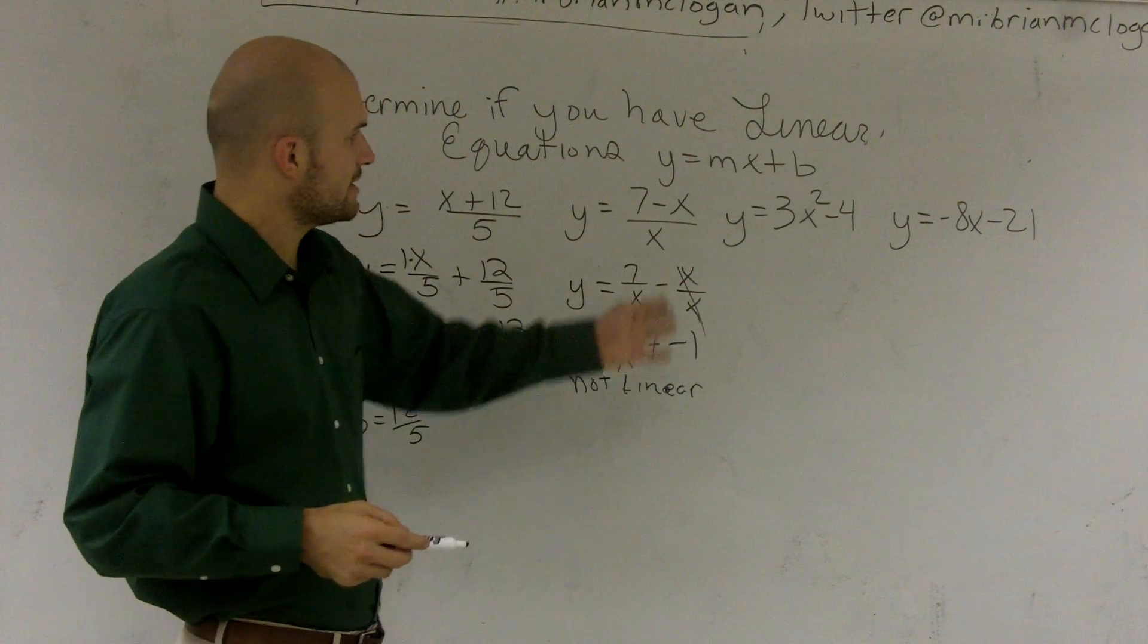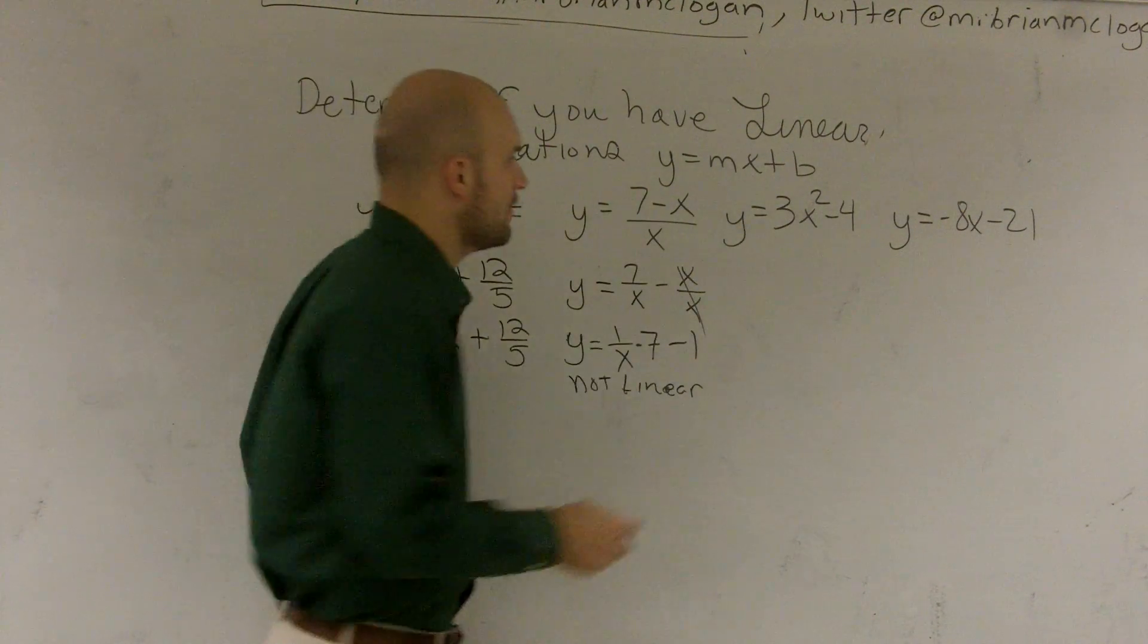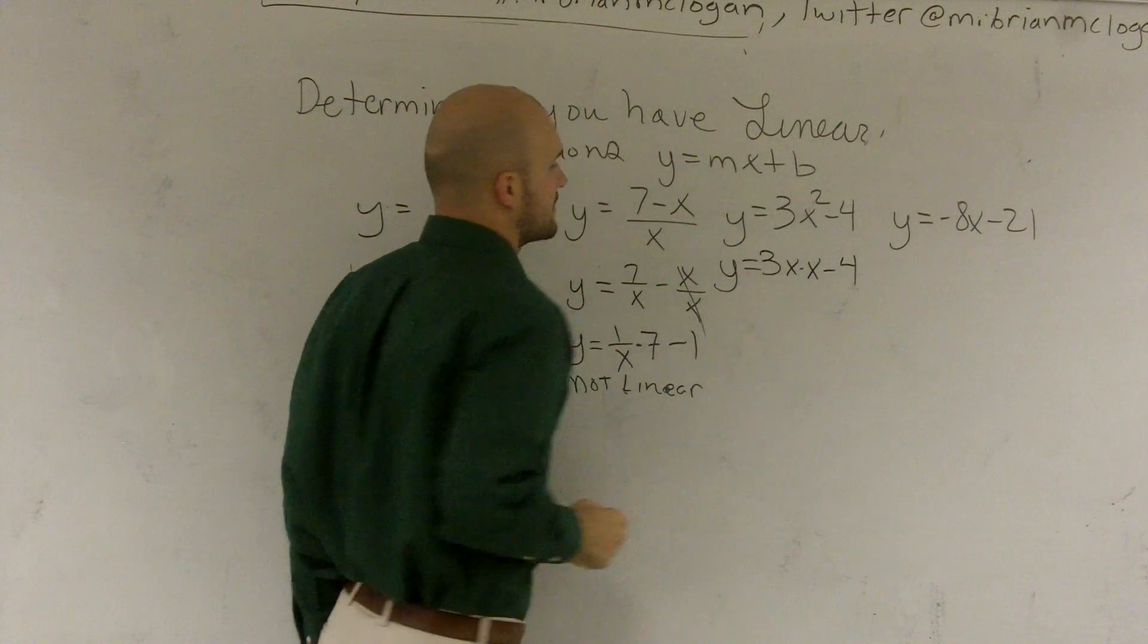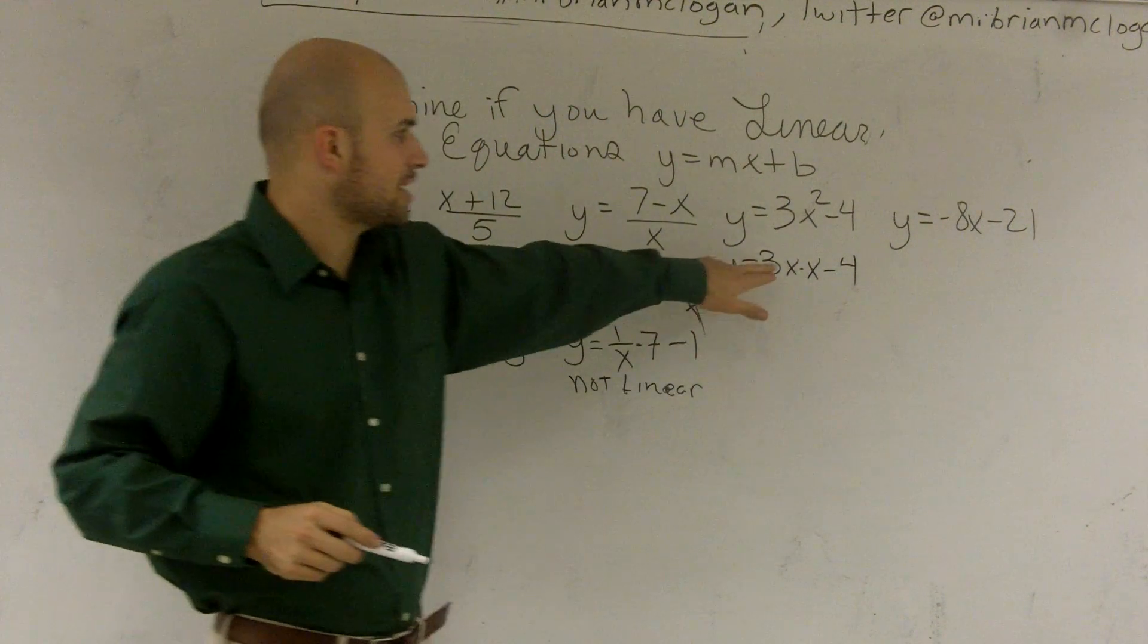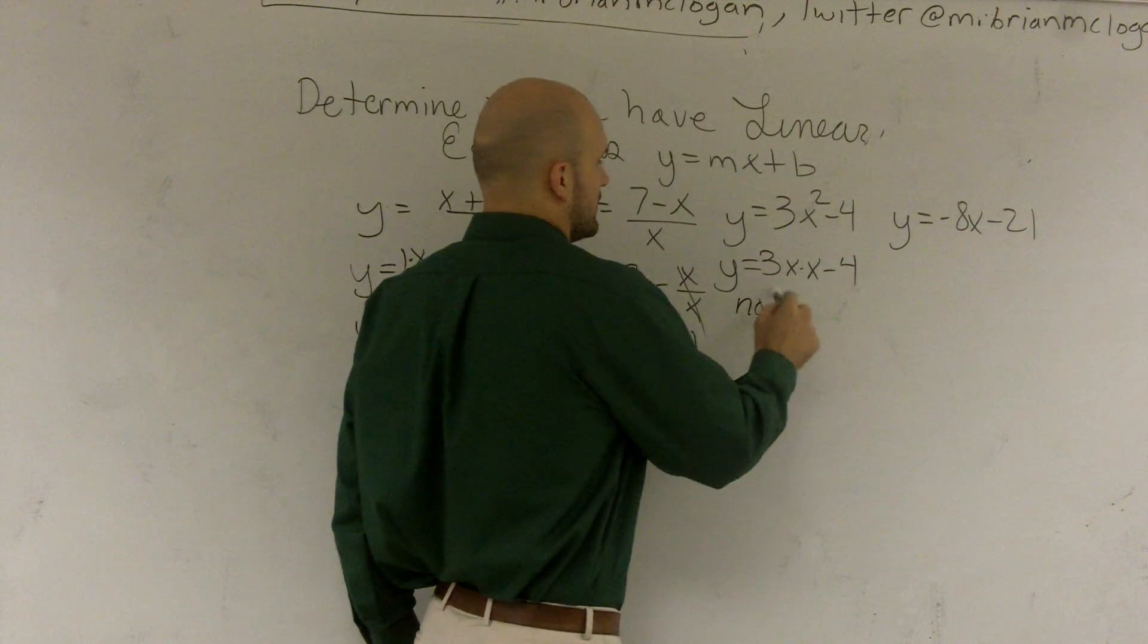Next problem. This is already in mx plus b form. I have my m is 3 and my b is 4. However, x squared means y equals 3x times x minus 4. So therefore, I have a variable multiplied by another variable. So therefore, this is also not linear.